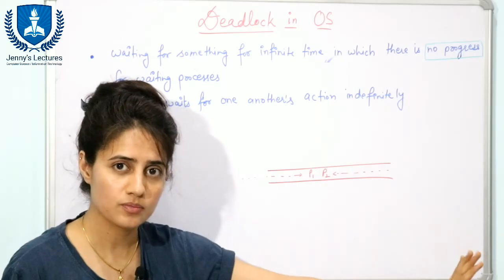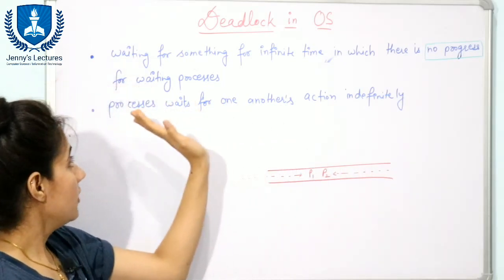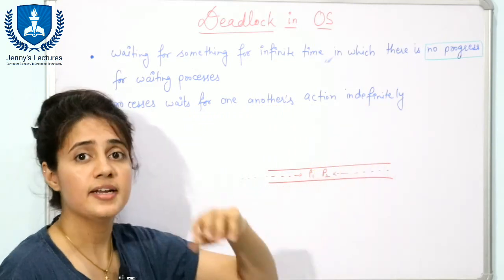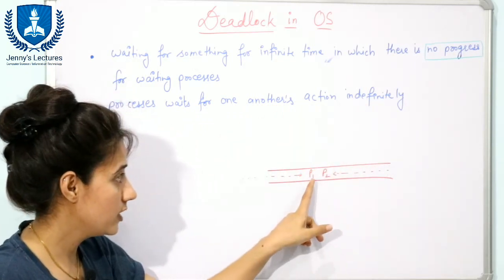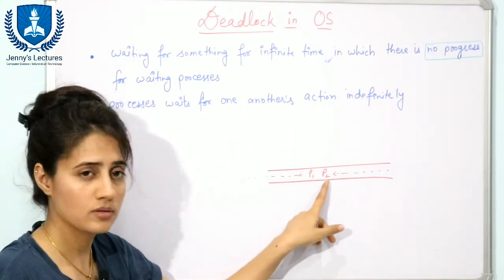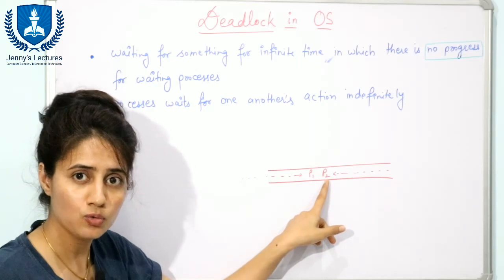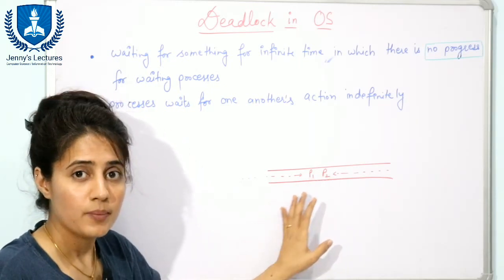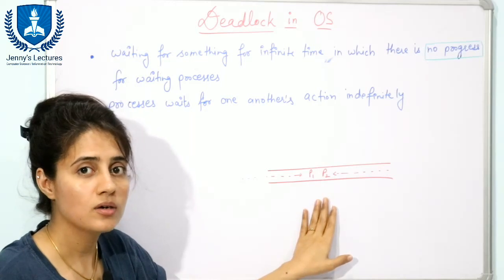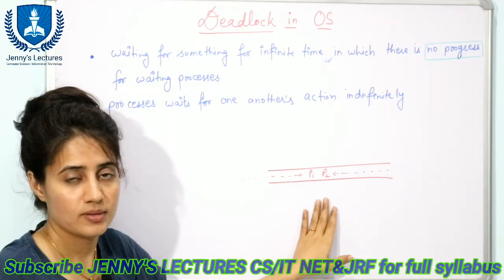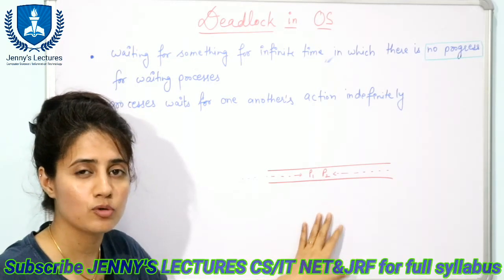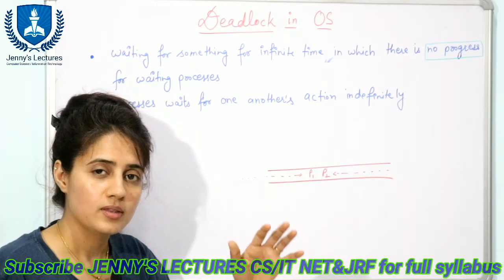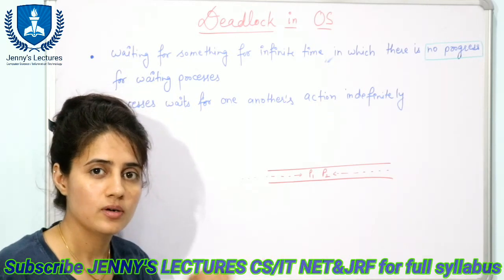No progress means deadlock. You can say processes wait for one another's action indefinitely — P1 is waiting for P2's action and P2 is waiting for P1's action, but these actions cannot occur. That is why processes have to wait indefinitely, and that is the condition of deadlock.